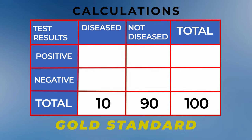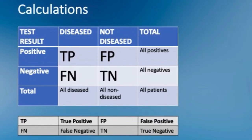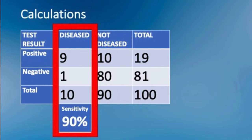Taking our new test and performing it on the same population: nine out of 10 diseased people test positive and one is missed. Among 90 healthy people, 80 were correctly classified as negative and 10 were incorrectly classified as positive. Sensitivity is the proportion of diseased individuals who will test positive — true positives divided by true positives plus false negatives. In this case, it is 9 divided by 10, or 90%. Tests with high sensitivity help us in ruling out a disease — remember the acronym SNOUT: sensitive, out.